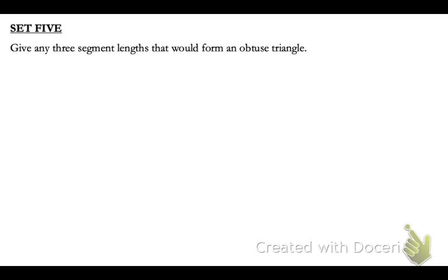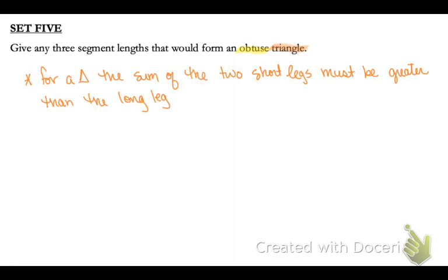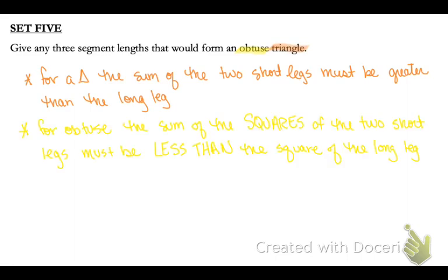And then on this last example, they say given any three segment lengths that would form an obtuse triangle. So there's two important things that they've drawn your attention to here. First off, it needs to be obtuse, and second, it has to be a triangle. So it can't just be any three sides. To be a triangle, the sum of the two short legs must be greater than the long leg. And then for it to be obtuse, it still has to meet those requirements. And also, the sum of the squares of the two short legs has to be less than the square of the long leg. So when we're picking, we have to make sure that our numbers meet both requirements.